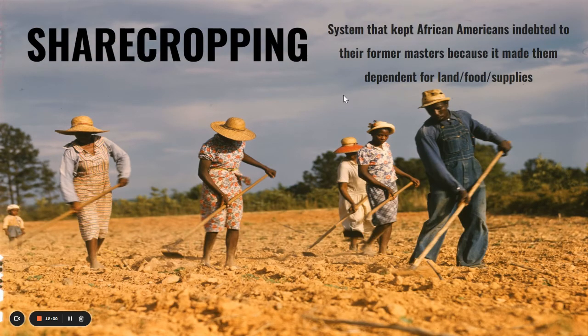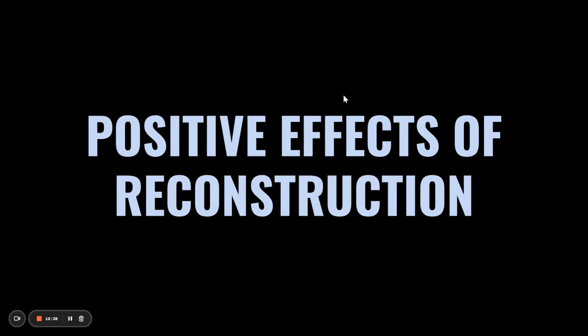Let's talk about the sharecropping system. This is the system that kept African-Americans indebted to their former masters by making them dependent for land, food, and supplies. A lot of former slaves found out they were free and wondered what to do next. Their former masters would say they could still work the land and own some of it, but some of their crops had to come back to them to pay for the land. It became a cycle of poverty where African-Americans working in the fields just could not meet the demands, so they were constantly indebted — like a second system of slavery in a sense.